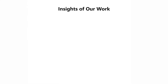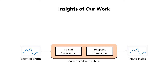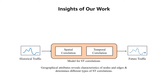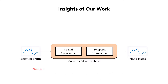General deep learning methods for traffic prediction combine spatial and temporal models. However, as geographical attributes can reveal characteristics of nodes and edges, determining different types of ST correlations, a shared model cannot effectively tackle this problem. So, the problem is how to make ST models learn traffic patterns given geographical attributes.